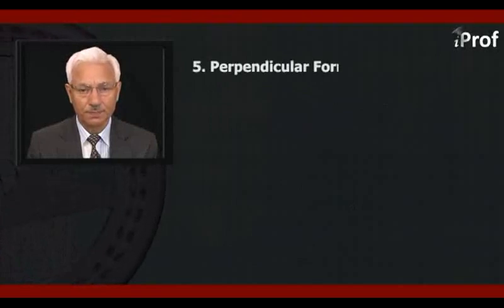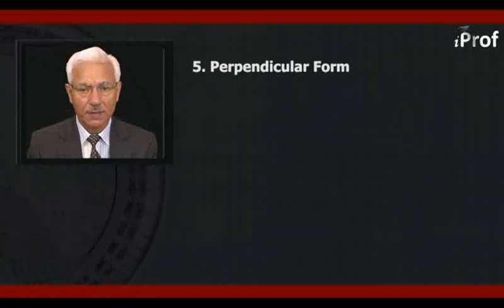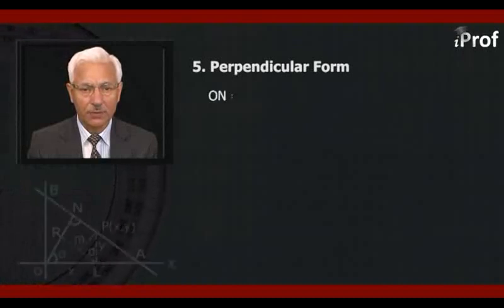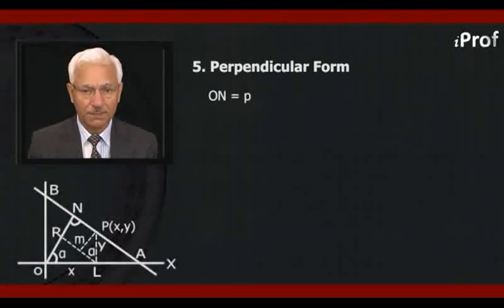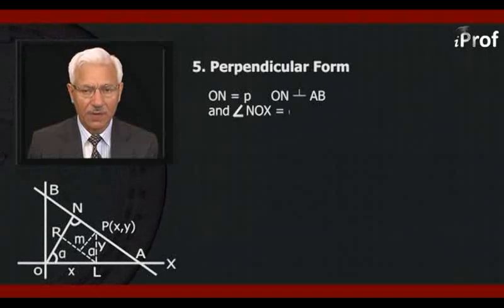Next we talk about perpendicular form. If the constant perpendicular ON from the origin to the line AB, ON is equal to P, and the angle NOx is equal to alpha.